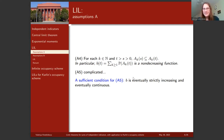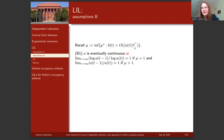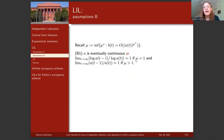For assumption A5, strict increase or eventual continuity is not strictly required — one can check the full condition in the paper. Now we pass to set B of assumptions. Assumption B1 states that variance is eventually continuous, or depending on the regime: if μ equals one, check the law ratio; if μ is bigger than one, check that the ratio of variances at certain points tends to one. This condition is technical, needed for the converse part of the Borel-Cantelli lemma.